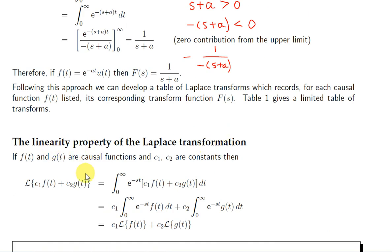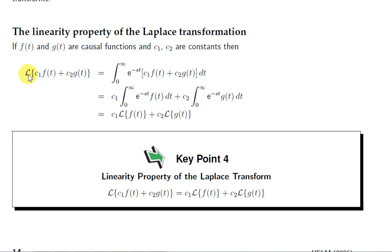Let's look at the linearity property of the Laplace transformation. We have two causal functions f(t) and g(t) — these functions are 0 for negative values of t — and c1 and c2 are any two constants. If we take the Laplace transform, we multiply this linear combination by e to the minus st. The integral of a sum is the sum of the integrals, and c1 is just a constant we can pull outside. We're left with c1 times the Laplace transform of f(t), and similarly c2 times the Laplace transform of g(t). So we can distribute L through a linear combination of functions.